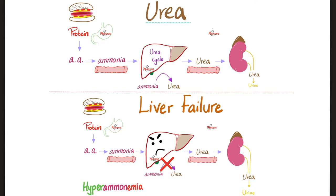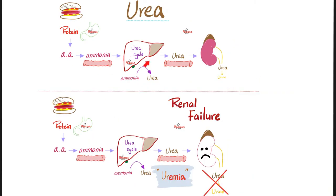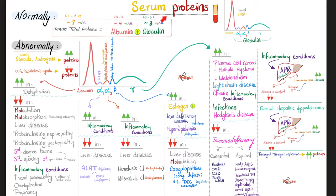If I have liver disease, the urea cycle won't take place. Therefore everything before the block goes up and I suffer from hyperammonemia — liver disease equals hyperammonemia. Kidney disease, on the other hand, equals uremia.